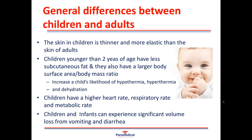Children have thinner, more elastic skin with more subcutaneous fat and a larger body surface area to mass ratio, giving them an increased risk of hypothermia — when the body is too cold — and hyperthermia — when the body is too hot. These differences also result in higher rates of dehydration. Children also have a higher heart rate, respiratory rate and metabolic rate than adults, and due to lower blood volumes can experience significant volume loss from vomiting and diarrhea.